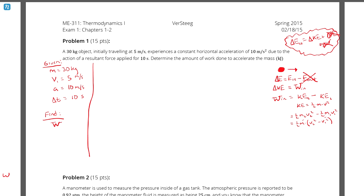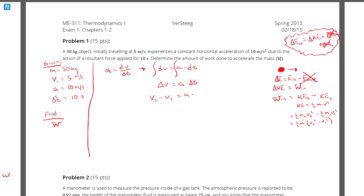Every second the velocity increases by 10 meters per second, so 10 seconds gives an increase of 100 meters per second, making v2 equal to 105. Using the equations of motion formally: acceleration equals dv/dt, so dv equals acceleration times dt. Integrating both sides gives delta v equals a times delta t, since acceleration is constant.